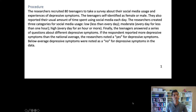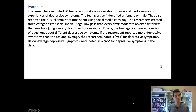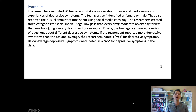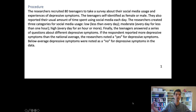The teenagers also answered a series of questions about depressive symptoms. When measuring depression in surveys, simply asking 'are you depressed?' can be tricky because people interpret and define depression differently, making it hard to get accurate answers. So researchers usually ask people about a large number of very specific feelings or experiences and how often they experience them, then collect data across this wide range of symptoms to come up with a more accurate measure.